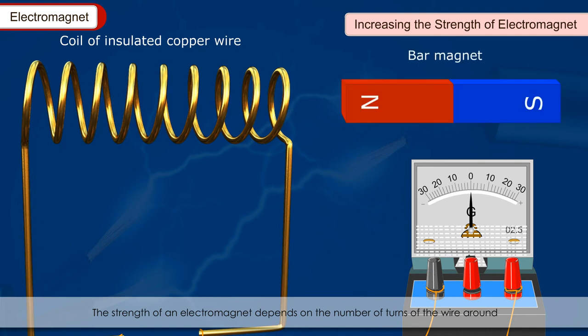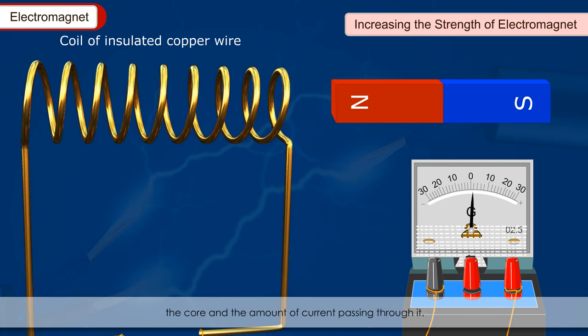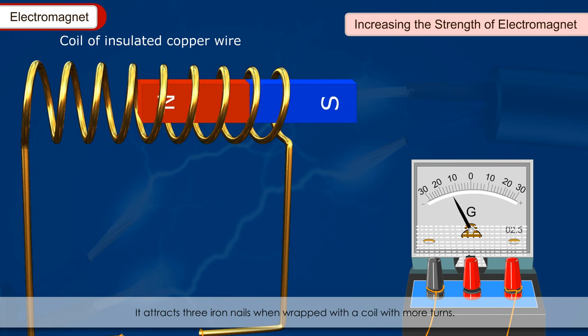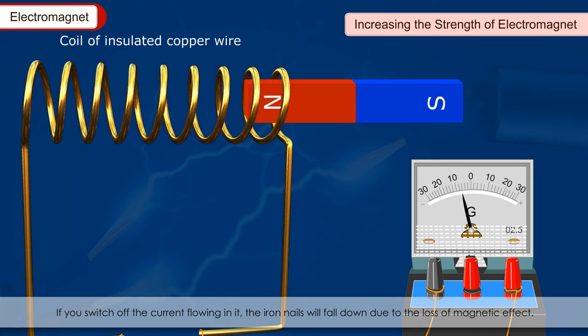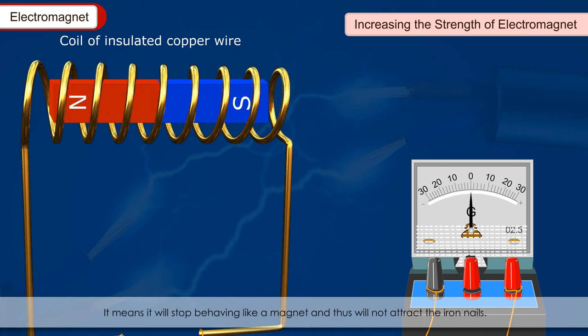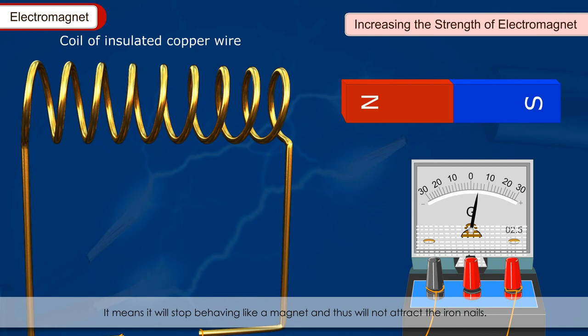The strength of an electromagnet depends on the number of turns of the wire around the core and the amount of current passing through it. The more number of turns, more powerful the magnet. It attracts three iron nails when wrapped with a coil with more turns. If you switch off the current flowing in it, the iron nails will fall down due to the loss of magnetic effect. It means it will stop behaving like a magnet and thus will not attract the iron nails.